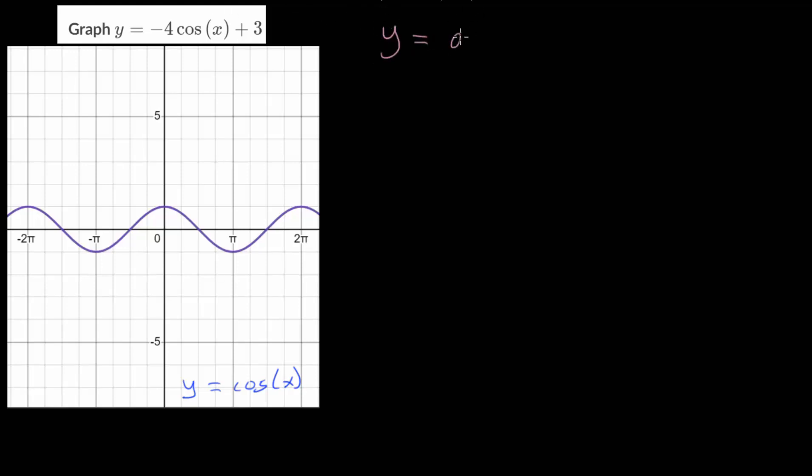The general equation for a sinusoidal function, it could be sine or cosine, is y equals a multiplied by the sine or the cosine of b times x plus c and then plus d.